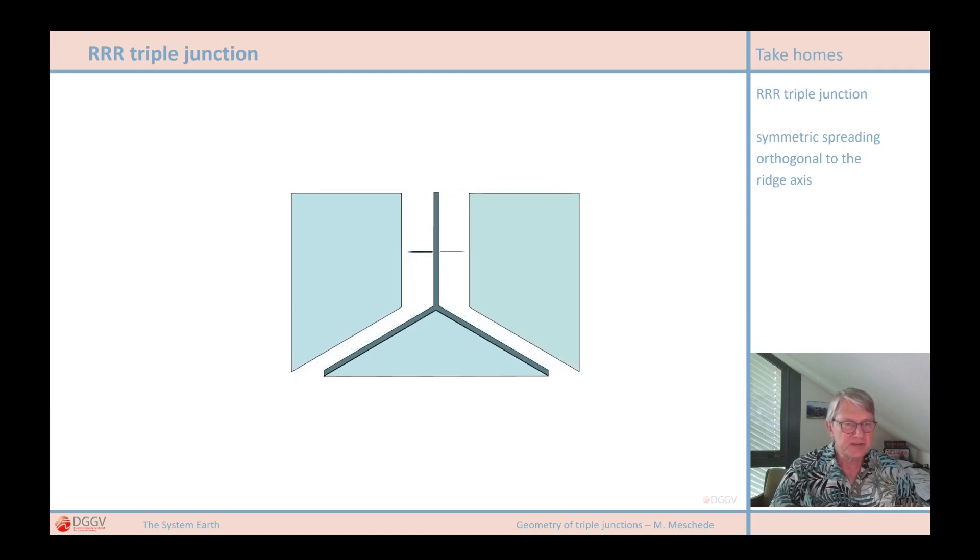If you just carry out this movement, assuming that the spreading is perpendicular to the ridge axis, you can already see that it somehow doesn't fit. I want to show that it's not just a simple spreading like shown here. There is something else to add.